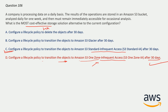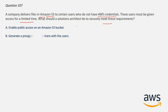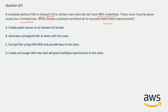Question number 107: A company delivers files in Amazon S3 to certain users who do not have AWS credentials. These users must be given access for a limited time. What should a solution architect do to securely meet this requirement? The correct answer is option B: Generate a pre-signed URL to share with the users. Pre-signed URLs grant permissions for a limited time, and since the users do not have AWS credentials, pre-signed URLs are the most correct answer.